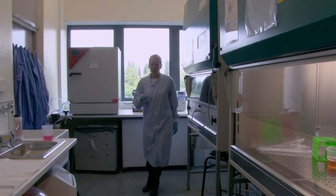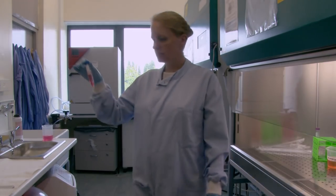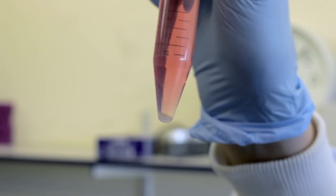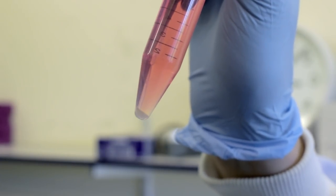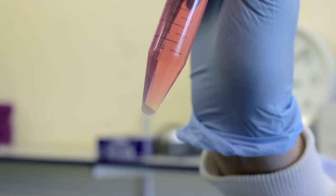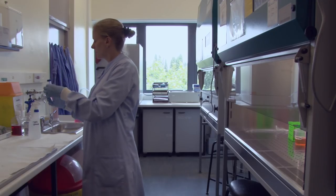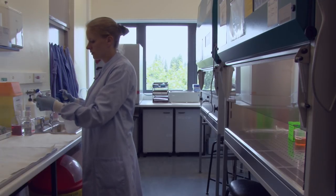Take the sample from the centrifuge and inspect it to ensure that the cells are in a pellet at the bottom. Sterilize it using ethanol before returning it to the cabinet.